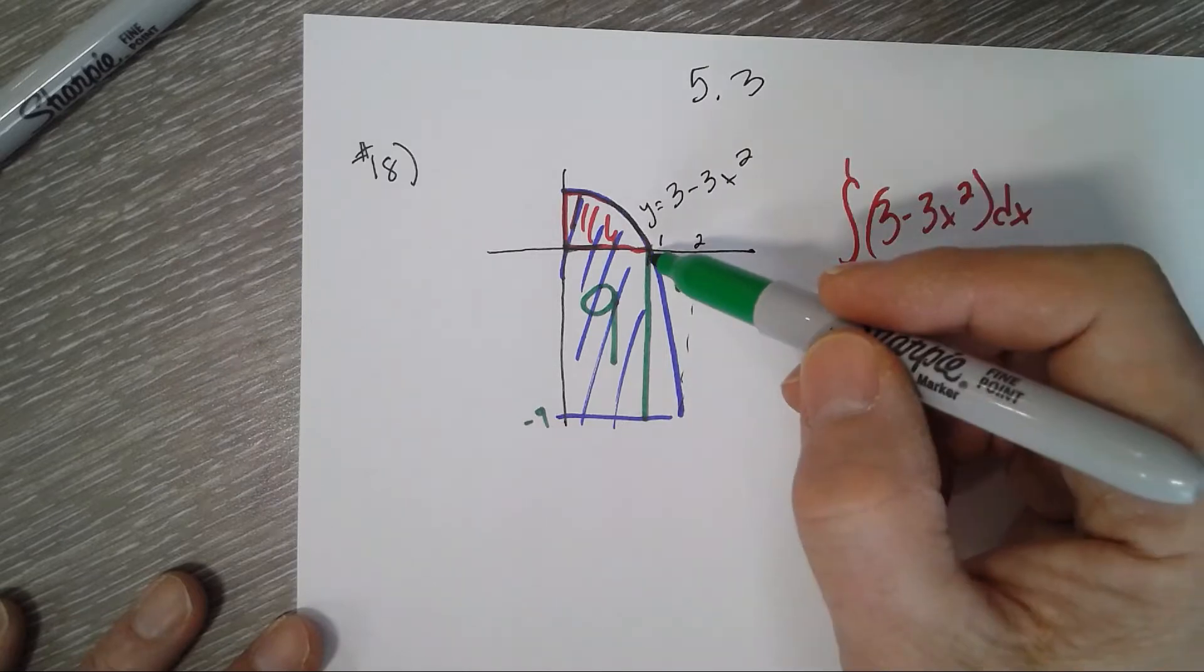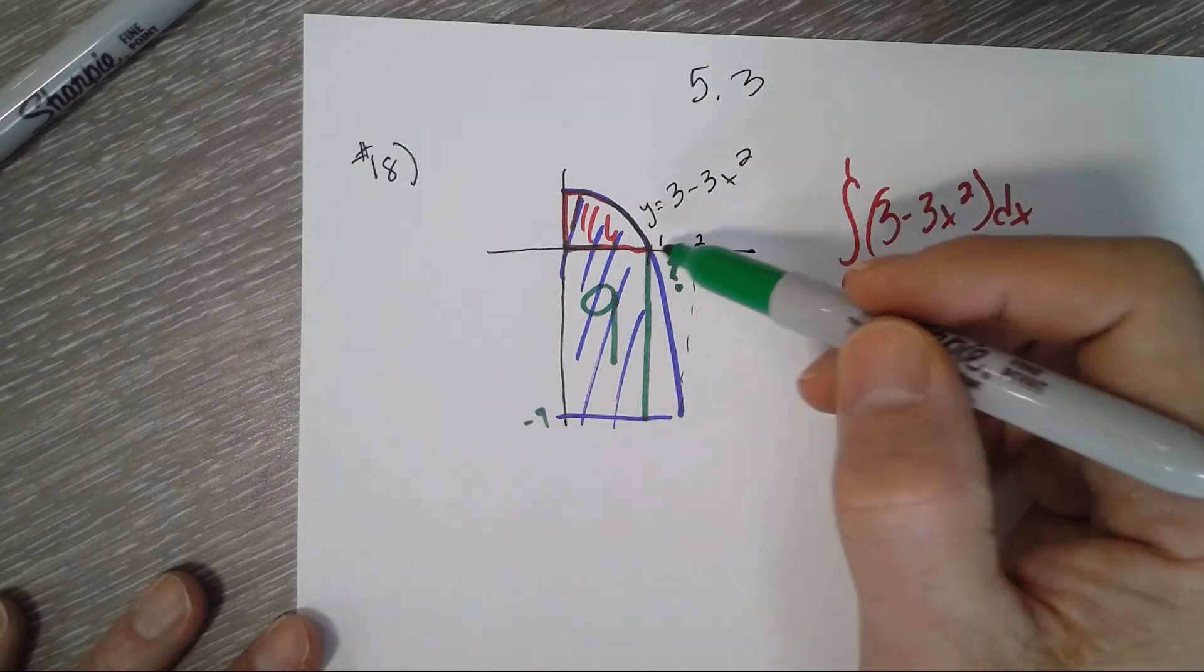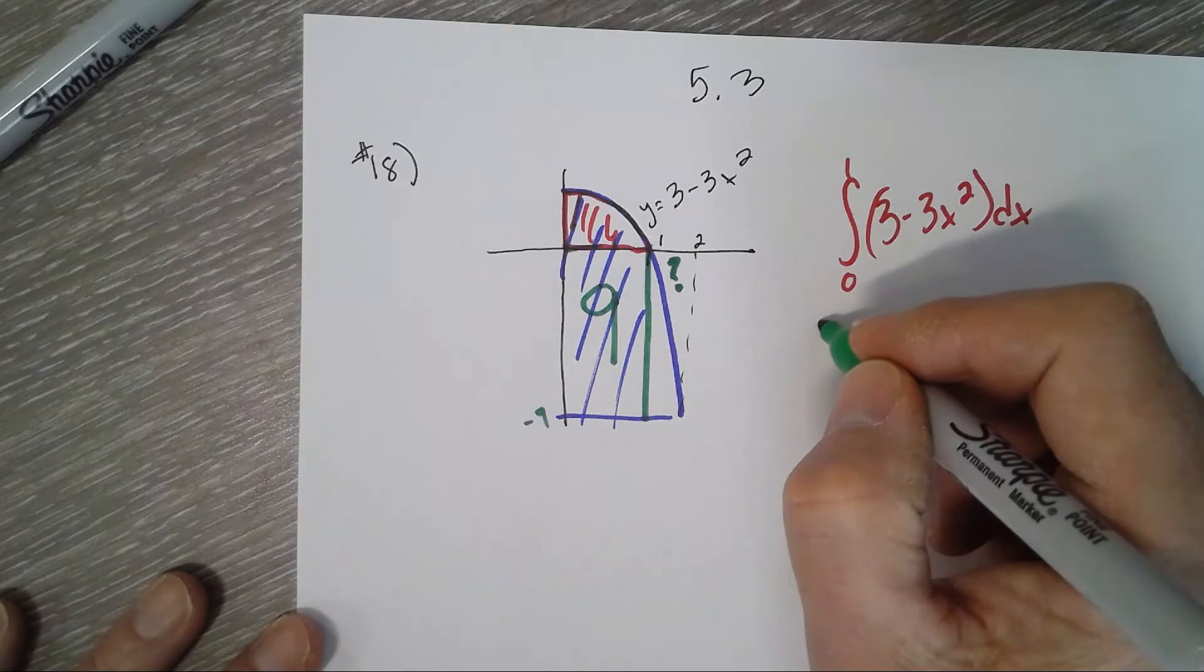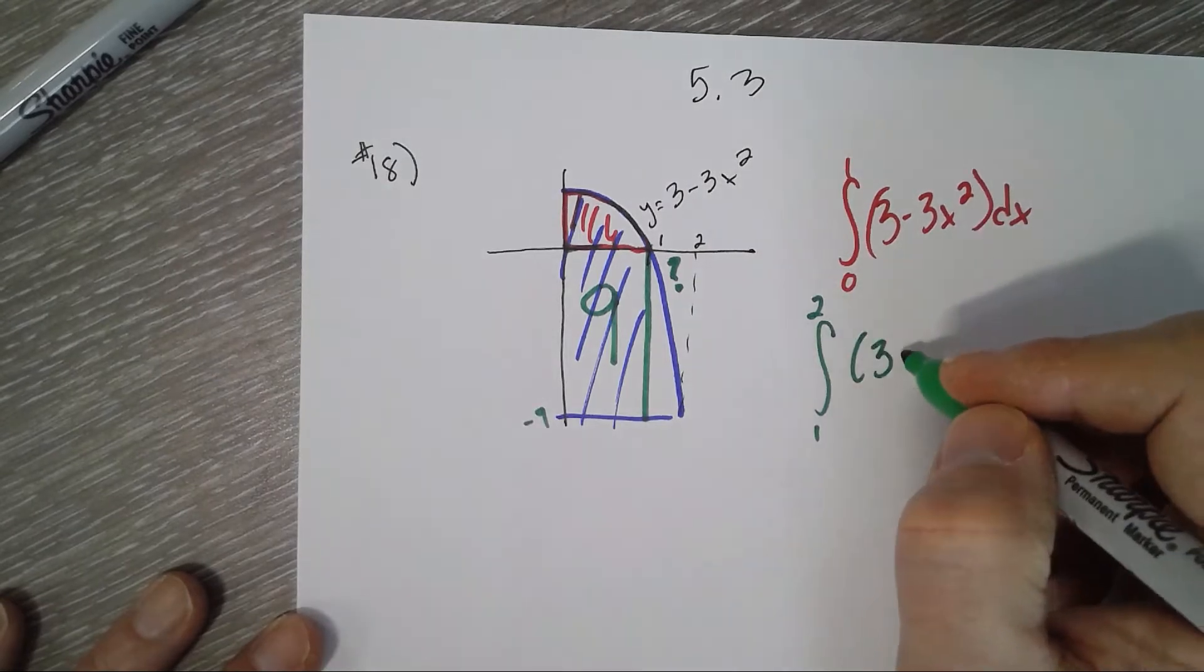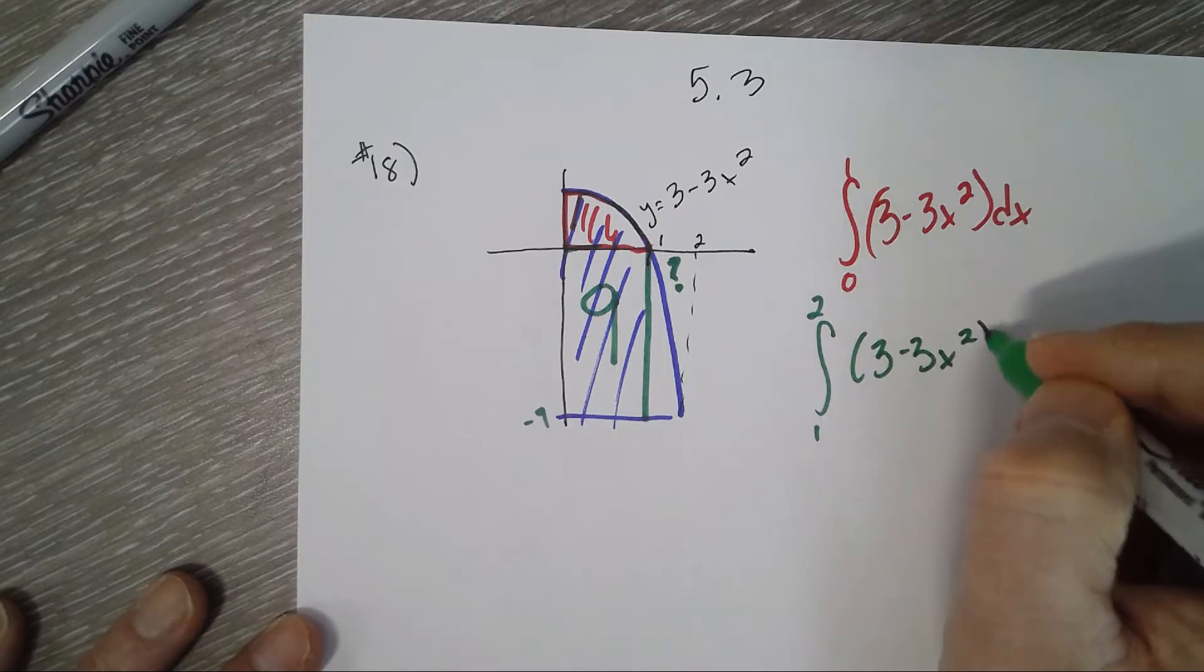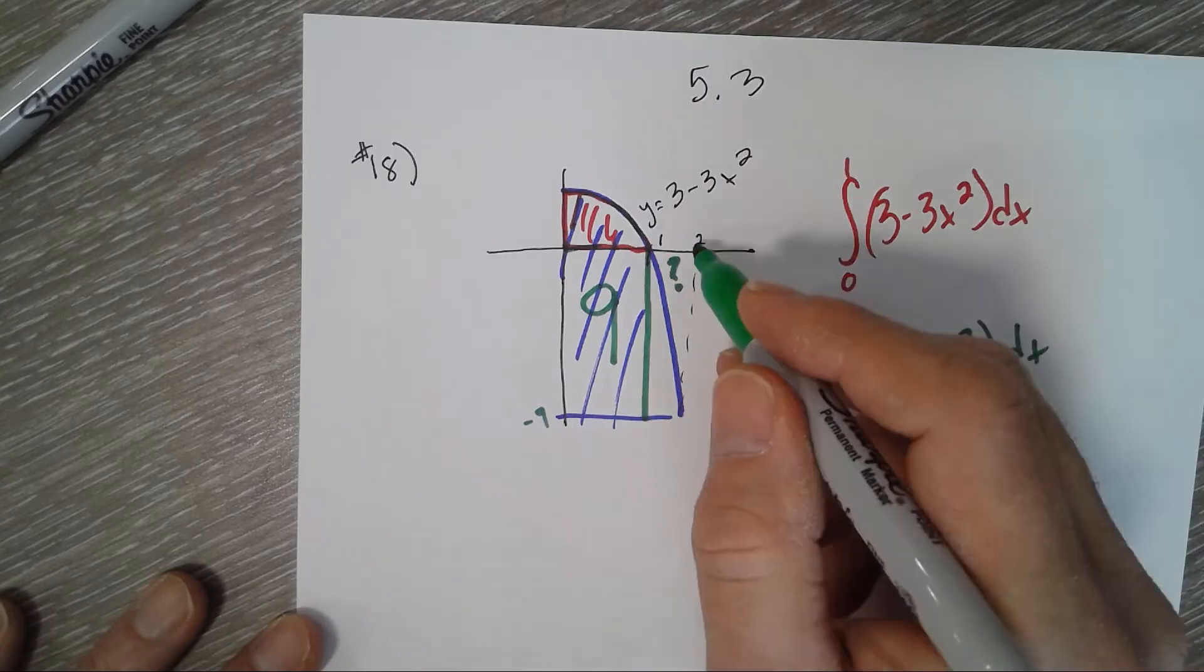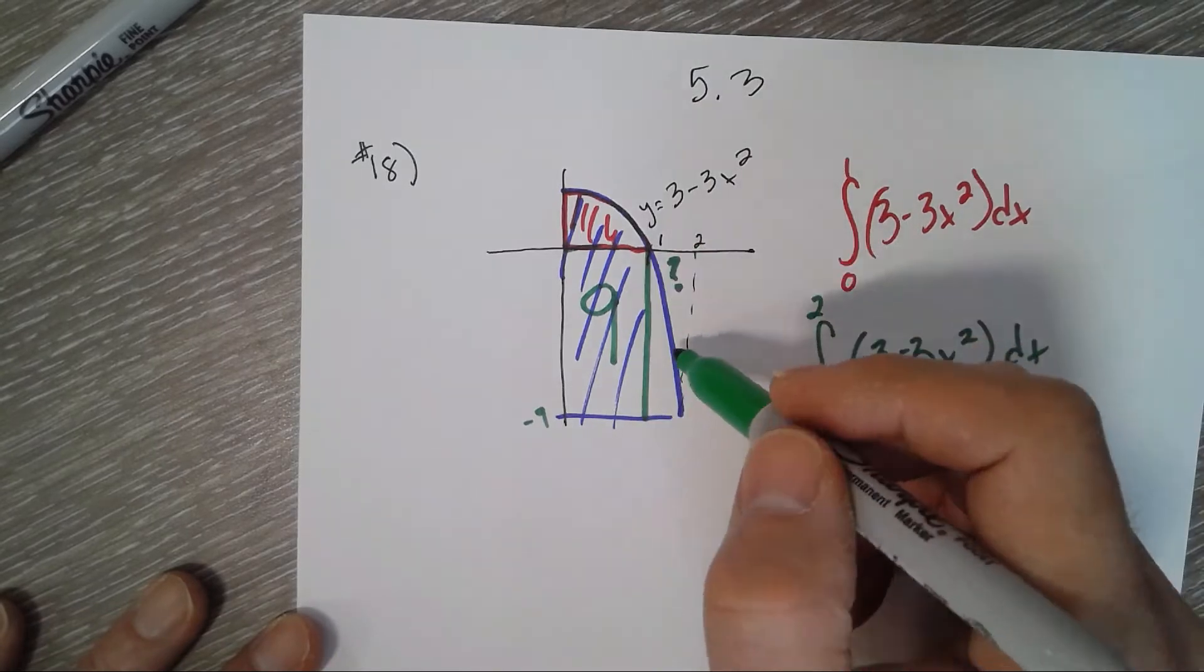You're going to get some negative answer because it's below the x-axis, and then we're just going to have this rectangle which is 9 minus whatever we get, and we'll get our answer.